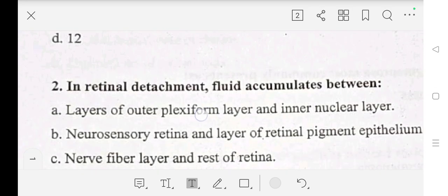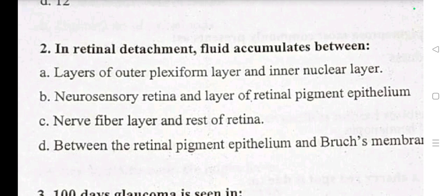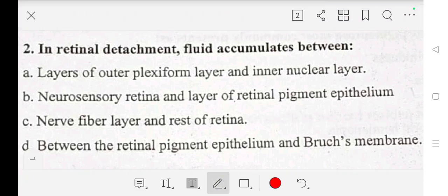Our second question is: in retinal detachment, fluid accumulates between — A: outer plexiform layer and inner nuclear layer, B: neurosensory retina and retinal pigment epithelium, C: nerve fiber layer and rest of retina, D: retinal pigment epithelium and Bruch's membrane. Our answer is B: neurosensory retina and retinal pigment epithelium.